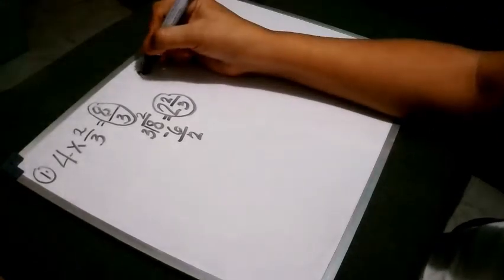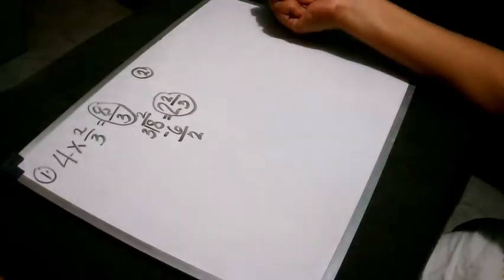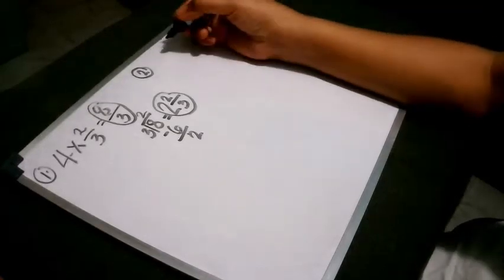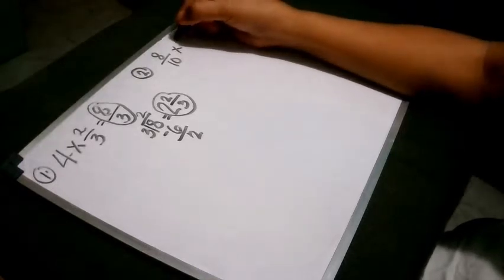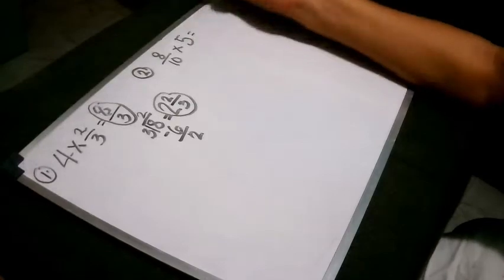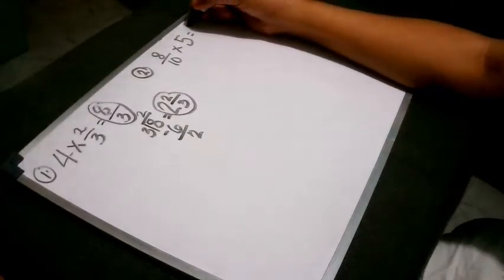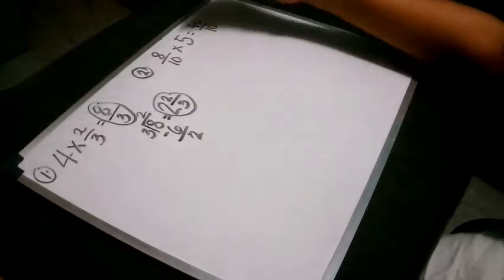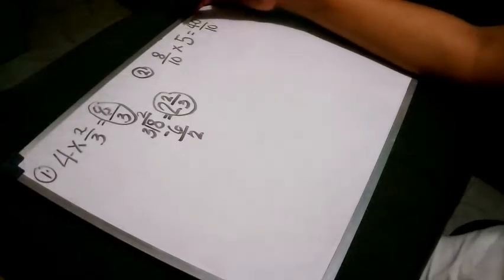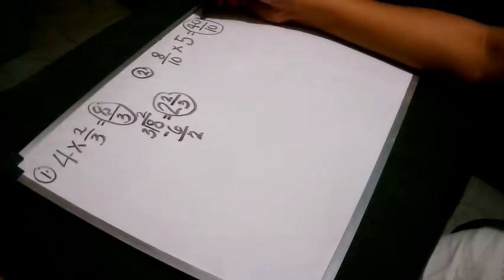Now let us proceed with another example. This time, our example starts with a fraction multiplied with a whole number. We have here 8 tenths times 5. The same approach: 8 times 5 equals 40, and then copy the denominator, which is 10. So our answer here is 40 over 10. This is an improper fraction.